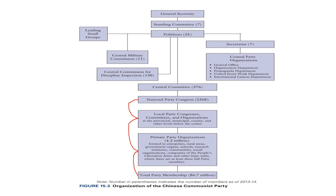The National Party Congress elects its immediate top, the Central Committee. The Central Committee elects the members of the Political Bureau — the Politburo — and the Politburo Standing Committee. The members of the Standing Committee and Politburo together elect the General Secretary, who is the supreme leader of the CCP. Right now, Xi Jinping, the President of China, is the General Secretary of the party.